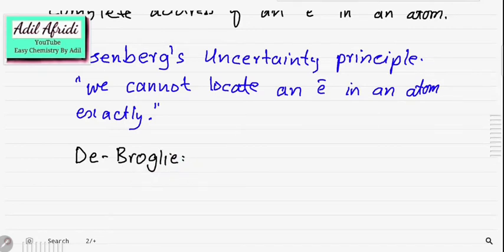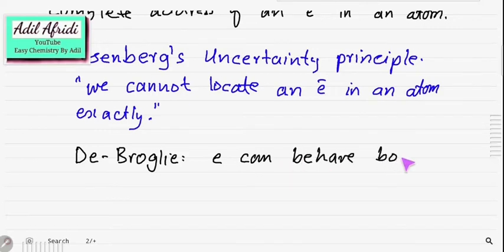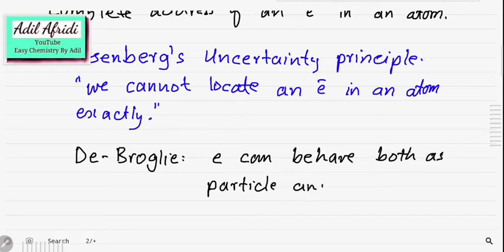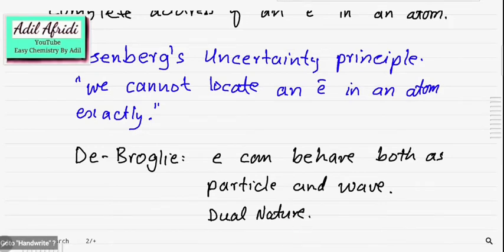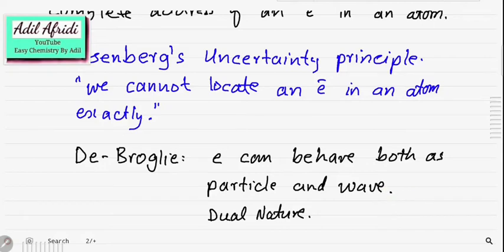Then de Broglie came and his hypothesis in simple words is that an electron can behave both as a particle and a wave — meaning the electron has dual nature. This reconciled Bohr and Heisenberg: when the electron behaves as a wave, its exact position is difficult to determine; when it behaves as a particle, Bohr's atomic model tells us its position.